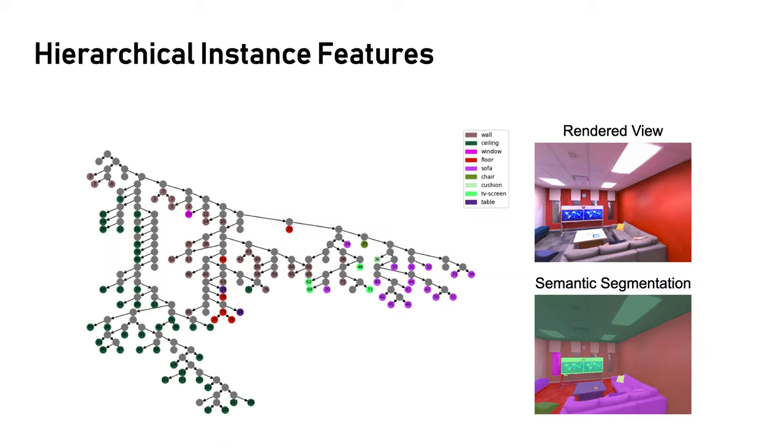Moreover, our instance feature field is built upon the object-agnostic masks, which can be masks of multi-level parts of an instance. Therefore, after contrastive learning on 2D instance masks, the instance features exhibit a hierarchical structure, enabling instance segmentation at different scales.